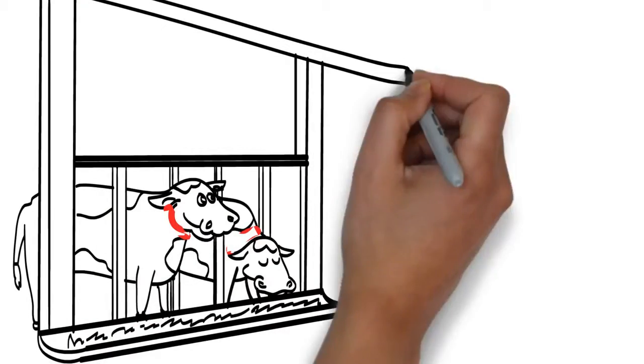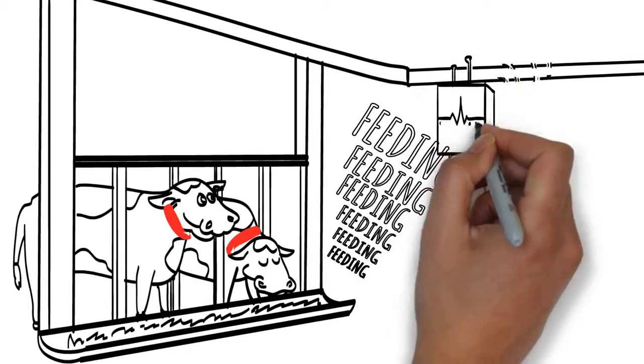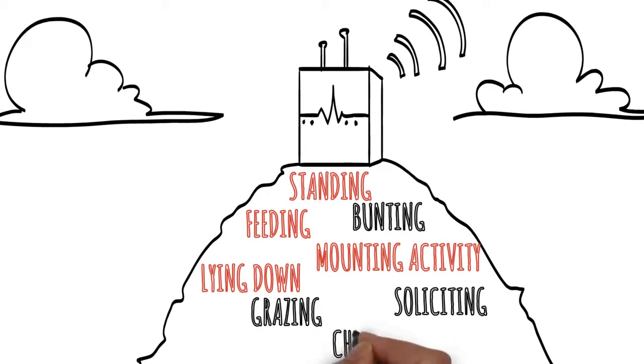Herd Insights works just as well indoors as outdoors. A gateway receives the gesture recognition data from the cows and sends it to the Herd Insights analytical engine on the cloud via the internet.